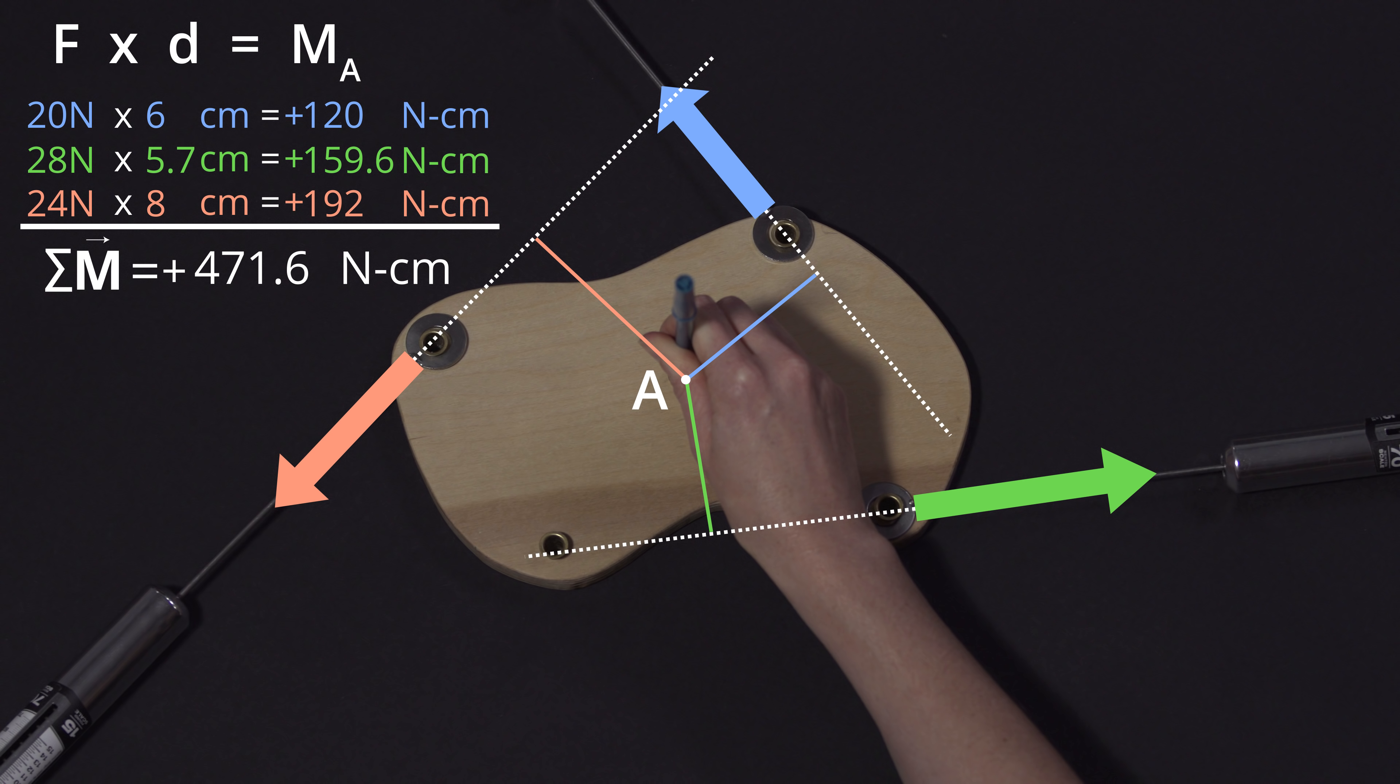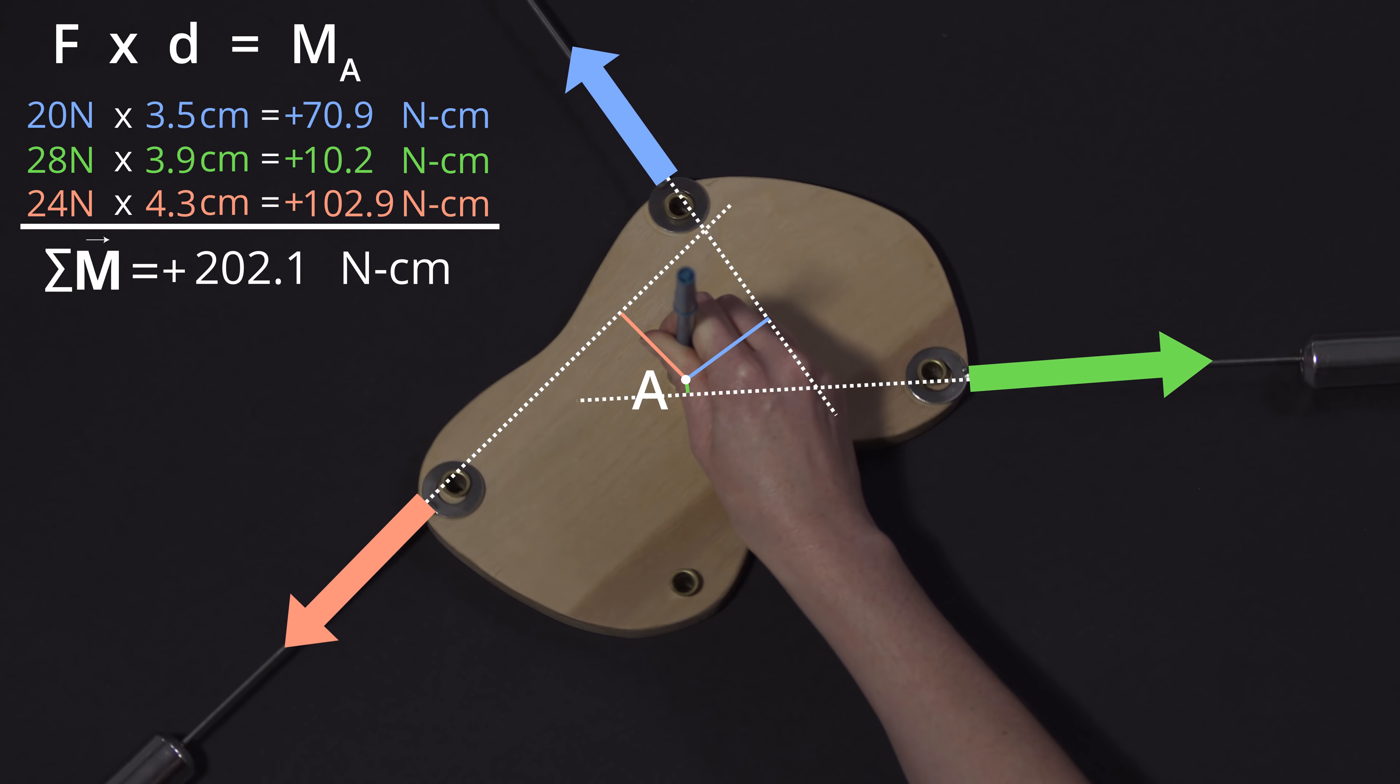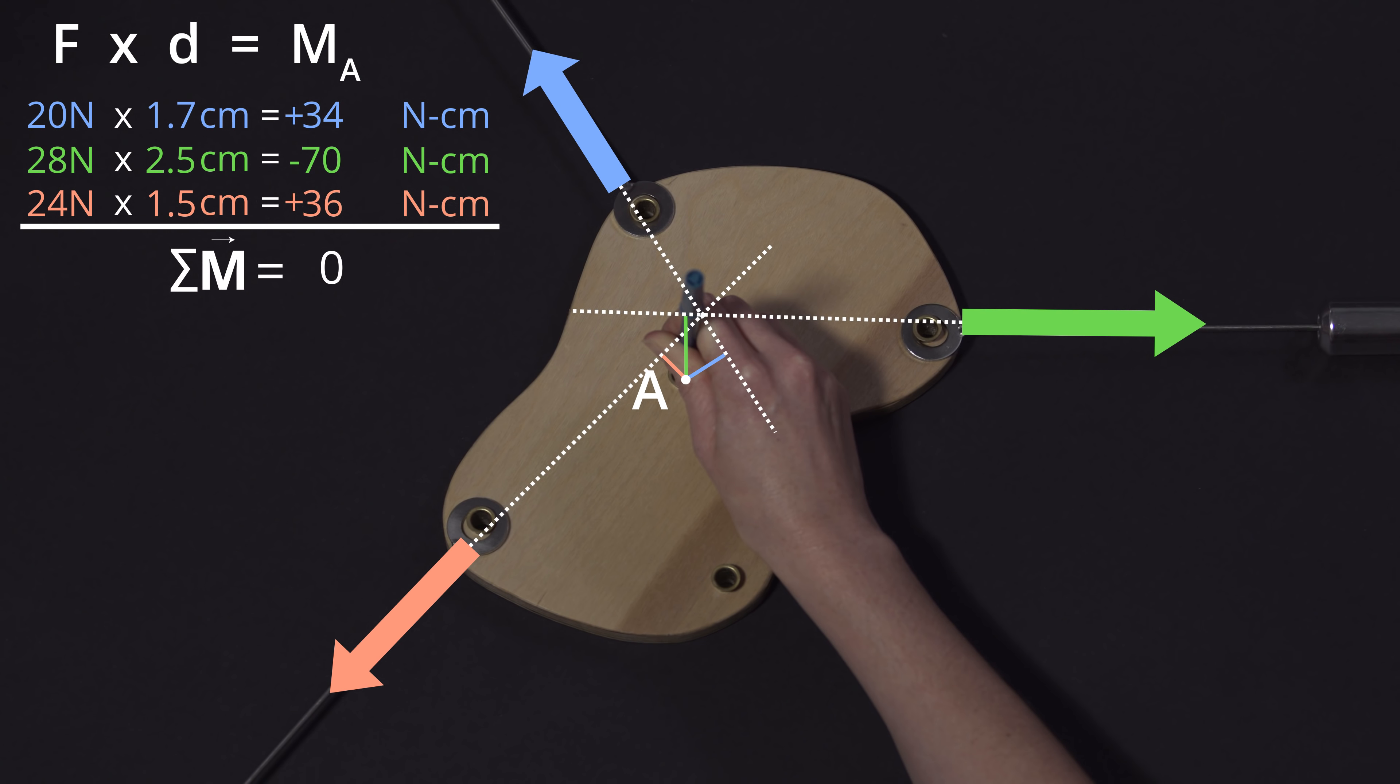When these forces are applied, the body clearly rotates counterclockwise, which is consistent with our calculations. As the body rotates, the perpendicular distances change. Eventually, the new distances are such that the total or net moment is zero. At that instant, the body stops rotating and it is in equilibrium.